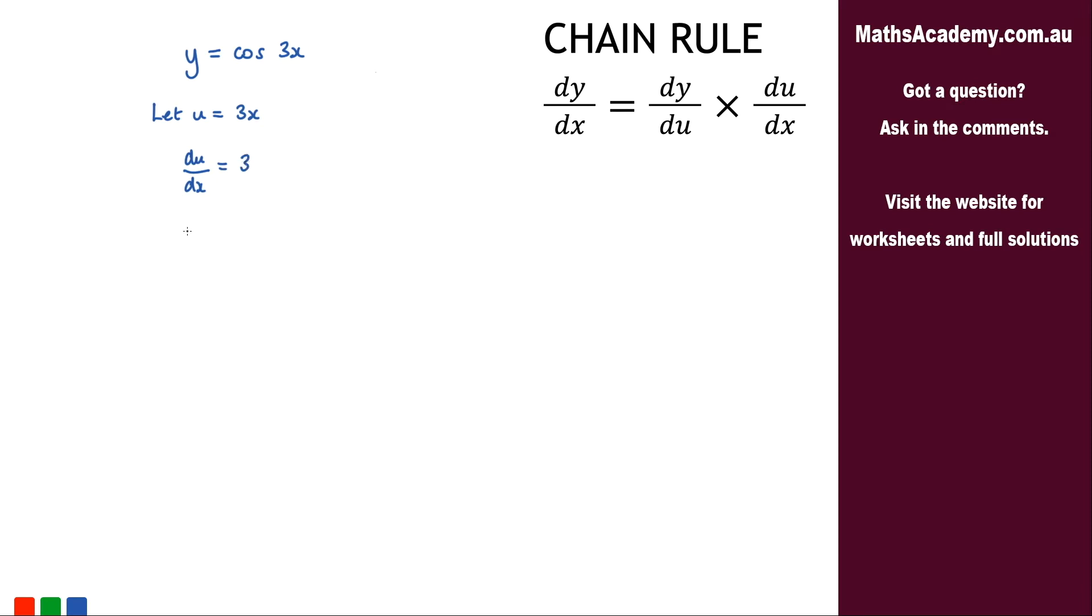So so far what we've got when we put that substitution in is that y is equal to cosine of u. Remember we've substituted in u for the 3x.